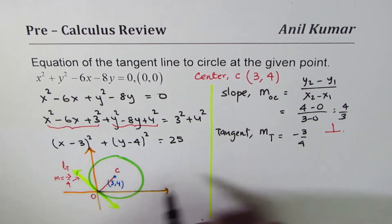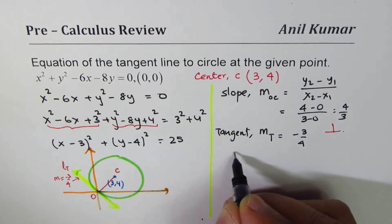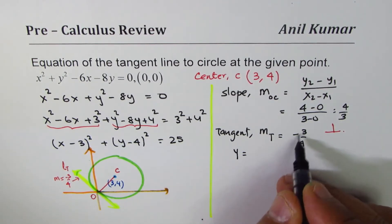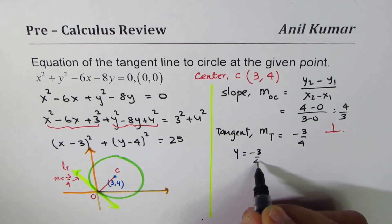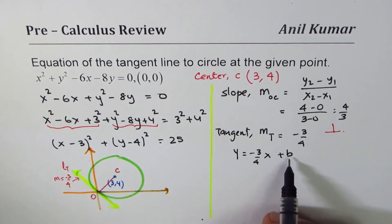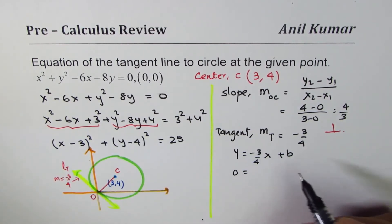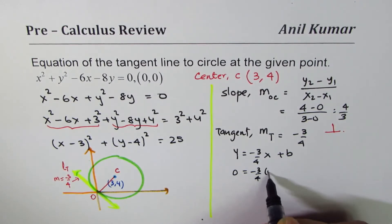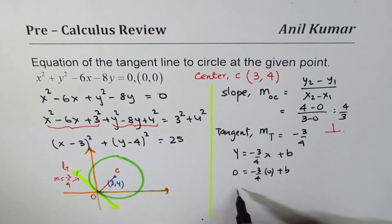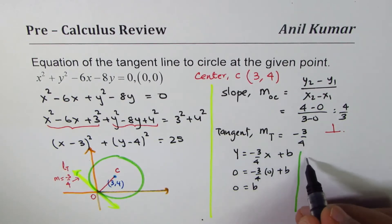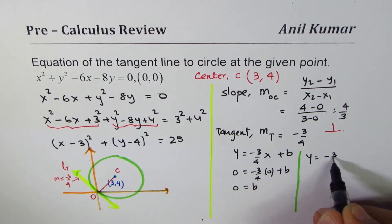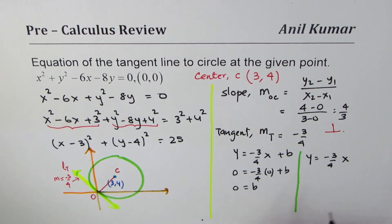In that case, what is the equation of tangent line LT? So equation will be y = slope is -3/4 times x + B. To find the value of B we can use the point which is origin, so 0 = -3/4 times 0 + B, so we get B as 0. Once you know B then you can write down the equation as y = -3/4 x + 0.